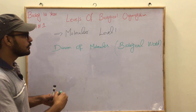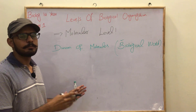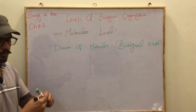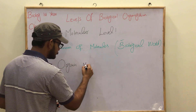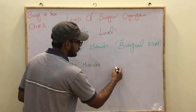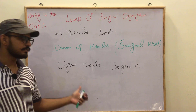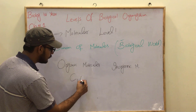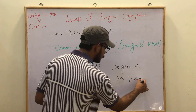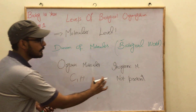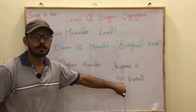The next division is molecules in the biological world. In the biological world, molecules can be divided. One type is organic molecules. The second is inorganic molecules. Organic molecules are those in which both carbon and hydrogen are present. Inorganic molecules are those in which carbon and hydrogen are not present.